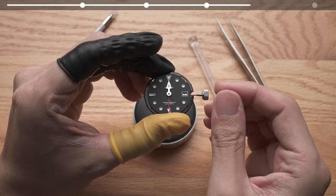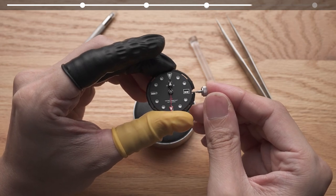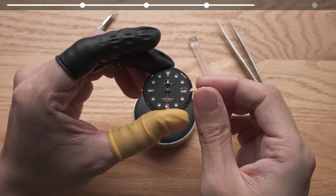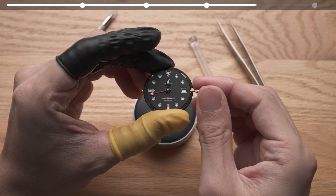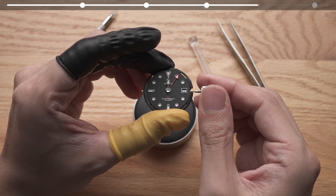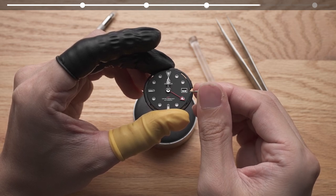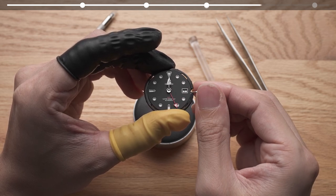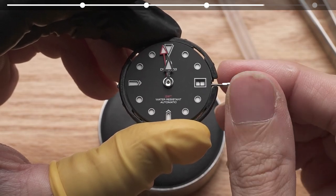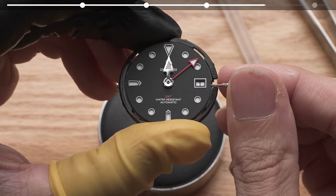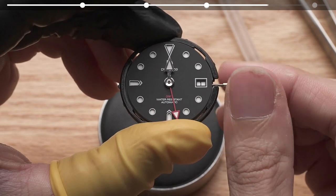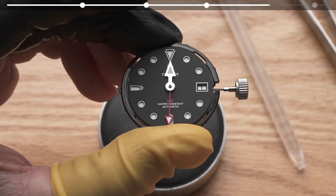At this point, you can try to quick set the GMT function. Push the crown all the way in and pull it out by one click. This is the date change or GMT quick change position. Turn the crown clockwise to move the GMT hand. After 24 jumps, it should return to the same position. The GMT hand is a 24 hour hand, and one jump is one hour. When it advances by 24 hours, it will move the entirety of the cycle once, landing on where it started.